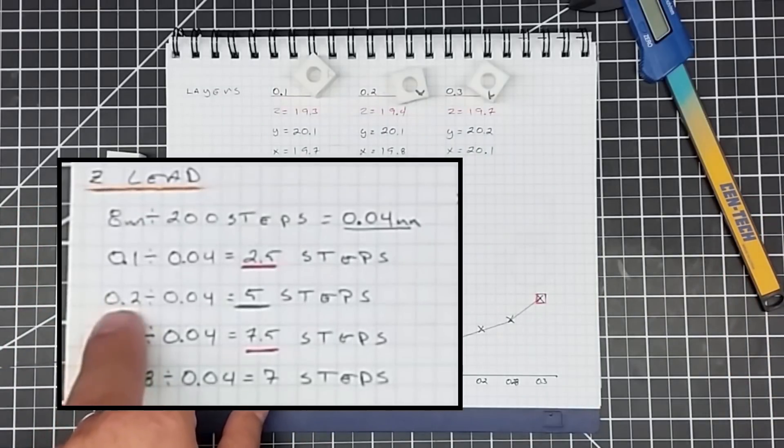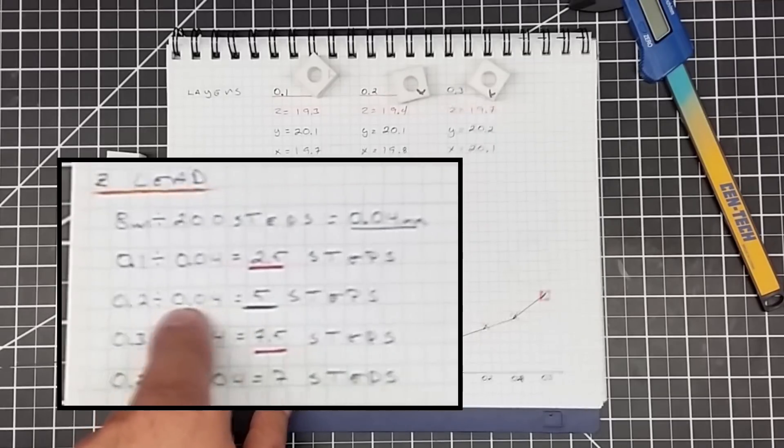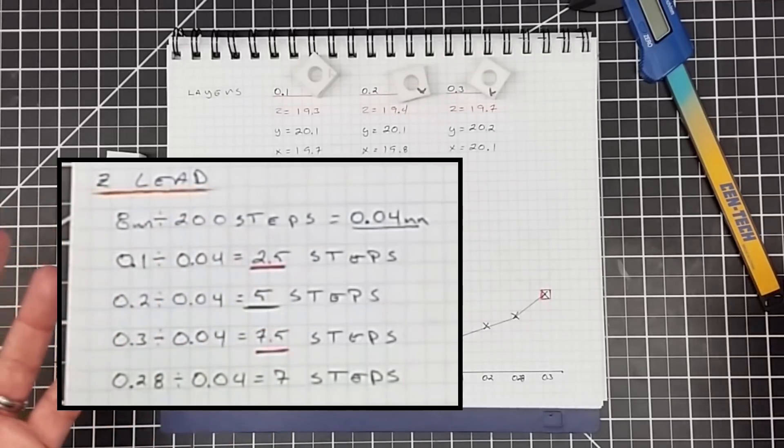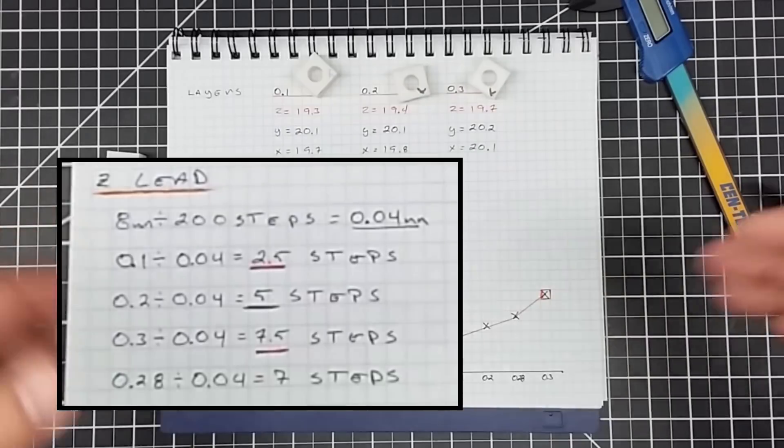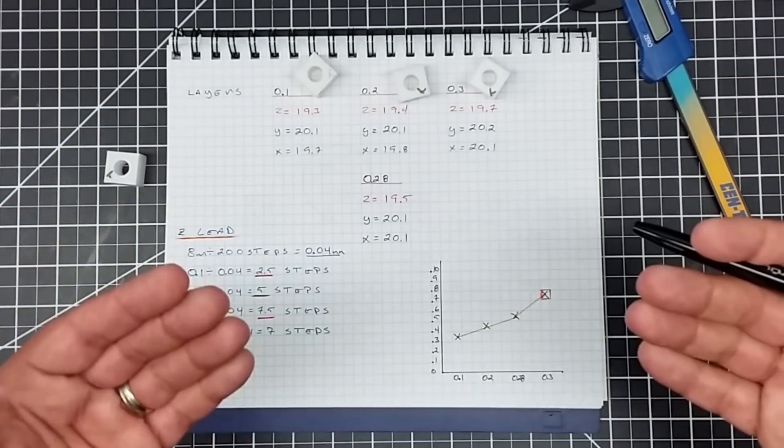Now, if we go to 0.2 millimeters, I have, I divide that by 0.04, that equals five steps. That's an even number. I can make five steps. The stepper motor can make five steps. So I can complete that dimensionally accurate.